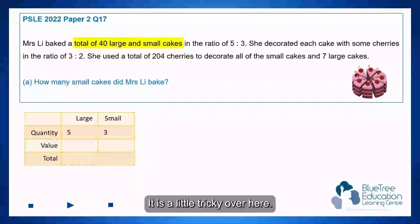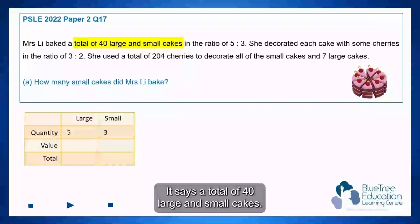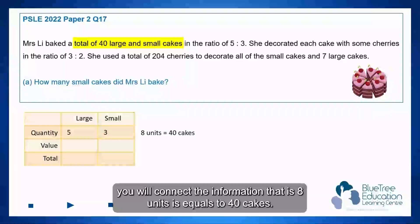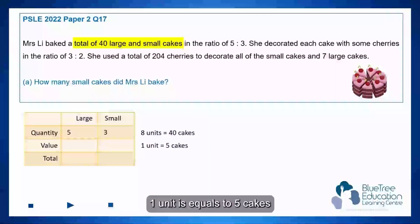Take note of this statement. It is a little tricky over here. It says a total of 40 large and small cakes. So with that, you will connect the information that this 8 units is equal to 40 cakes. 1 unit is equal to 5 cakes.